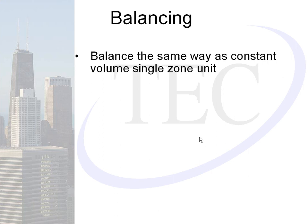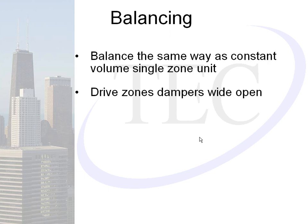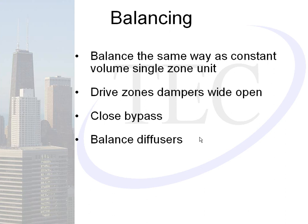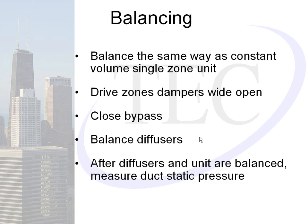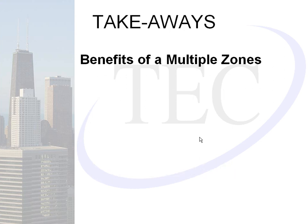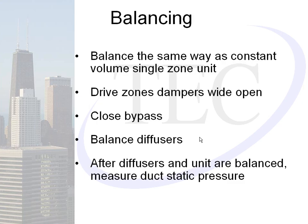Balancing a VVT system is actually very easy. VVT gets balanced the same way as a constant volume single-zone unit. Put the system into balancing mode, which drives all zone dampers wide open and closes the bypass damper. Balance your diffusers and rooftop according to design. After balancing, measure the duct static pressure — that becomes the static pressure set point for your VVT system residing in the bypass controller.